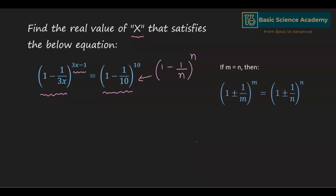On the power we have 3x minus 1, so we have to reduce this into 3x minus 1. We can do this by rearranging the equation. Rearranging gives: just multiplying 3x by 1 gives 3x minus 1 divided by 3x, to the power of 3x minus 1, is equals to 1 minus 1 by 10 to the power of 10.